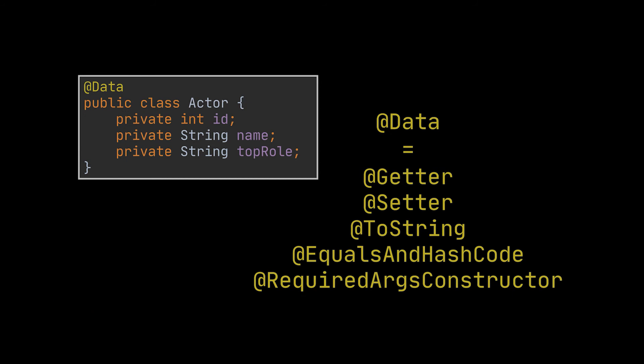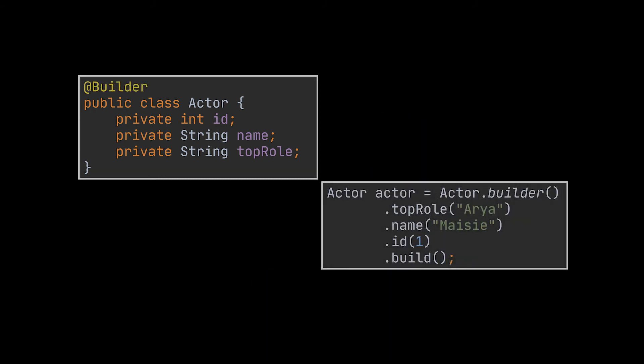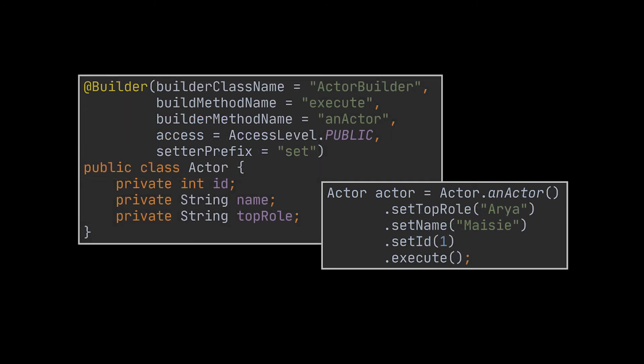Builders quickly became categorized as boilerplate code, and Lombok with the @Builder annotation provides a solution for that. When you add @Builder to a class, a builder will be generated for it. The default builder generated by Lombok for the actor class returns an instance via the build method. Customizations include changing the builder class name, the builder method name, the build method name, and the access level — each using their corresponding arguments.